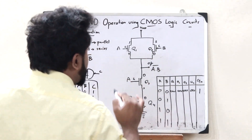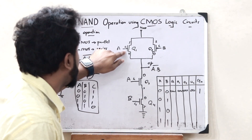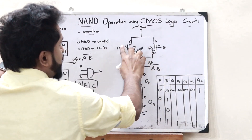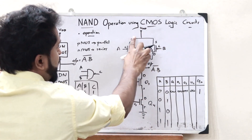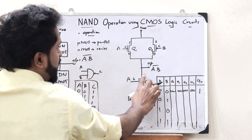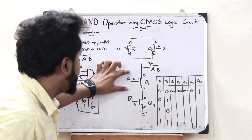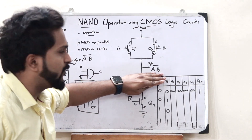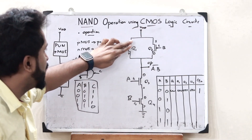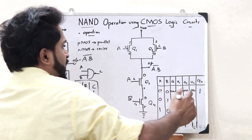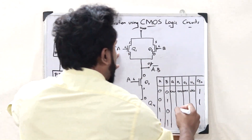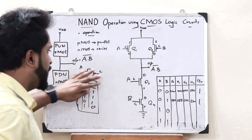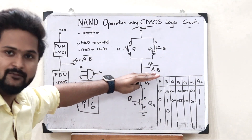Next, when A=0 and B=1: since A=0, the PMOS transistor Q1 is on; since B=1, Q2 is off. Since Q1 is on, current can flow through it to the output, giving output 1. In the NMOS side, A=0 means Q3 is off — so the pull-down path is cut off from there. Q4 is on, but it doesn't matter since Q3 is off and nothing flows down.